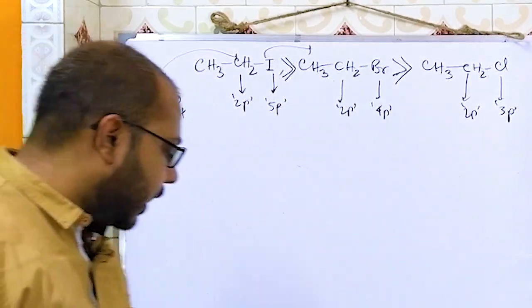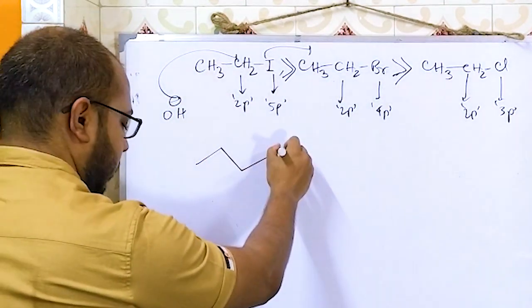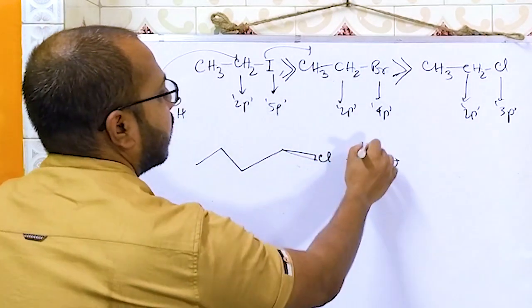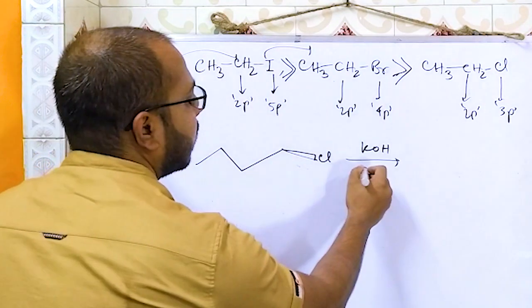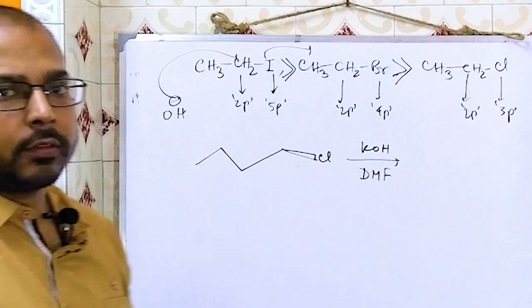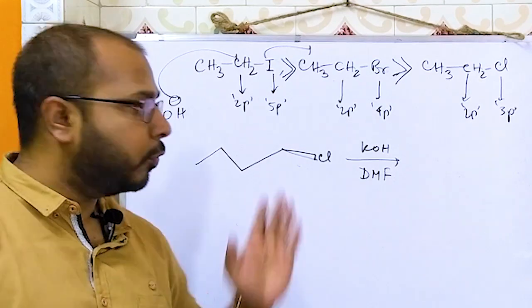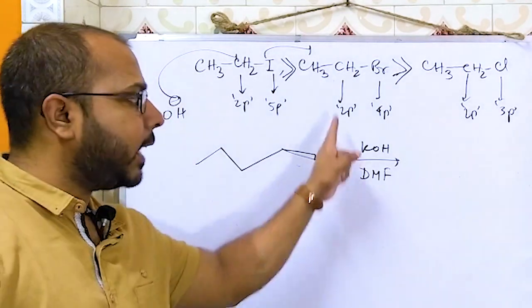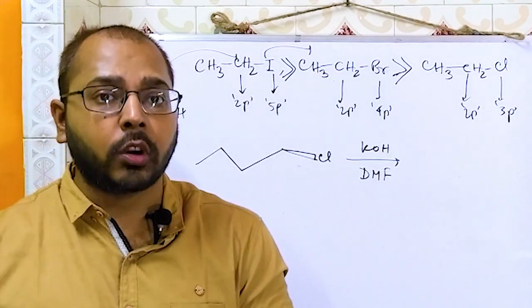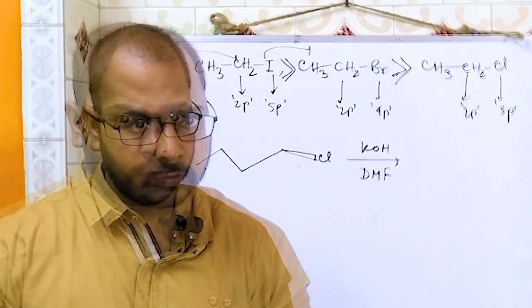Next question: KOH is given as nucleophile with DMF as solvent. DMF — dimethylformamide — is a polar aprotic solvent, which can solvate the cationic part but not the anionic part. I have already discussed the difference between polar protic and polar aprotic in the basic SN1/SN2 concept video.